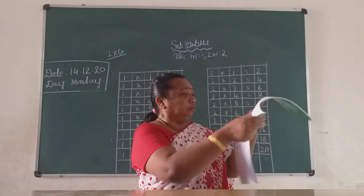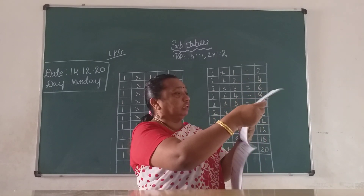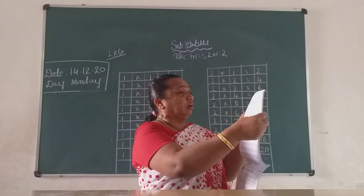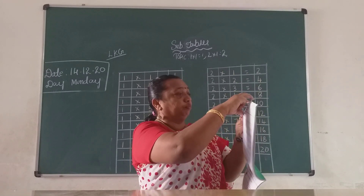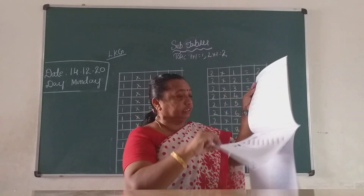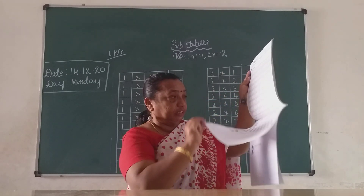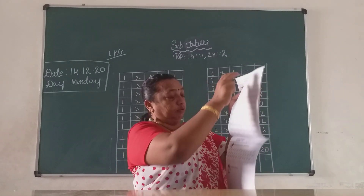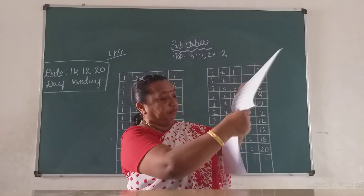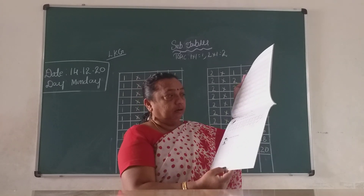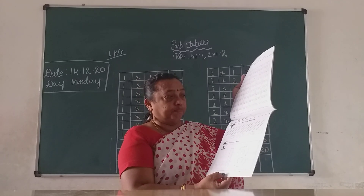You have to do three pages. When you come on Saturday, you have to bring this book for correction. Page number fifty-three, page number fifty-four, page number fifty-five — worksheet, you have to complete, children.